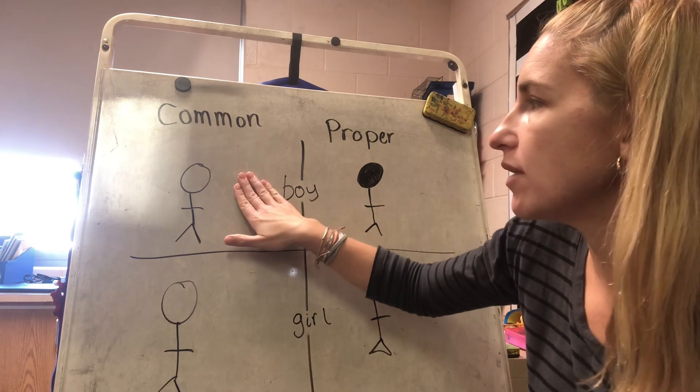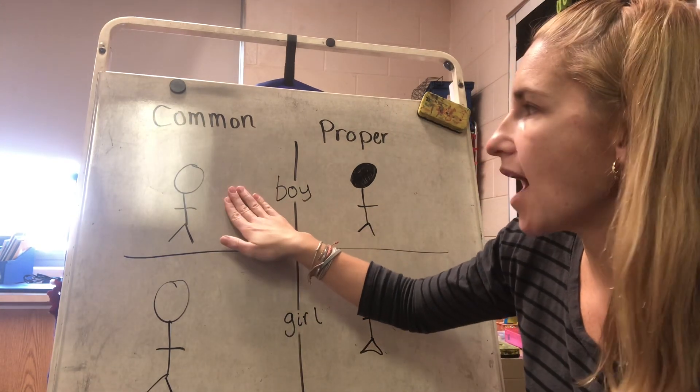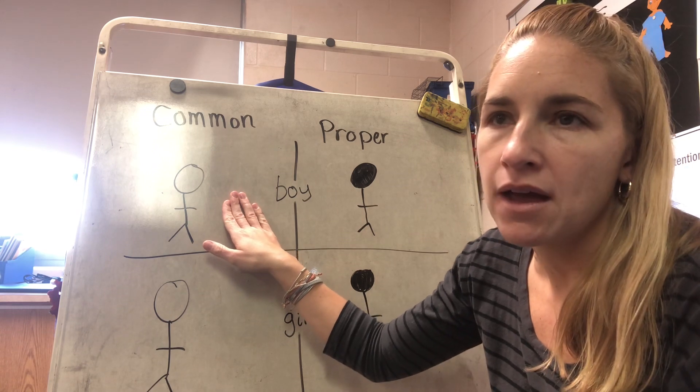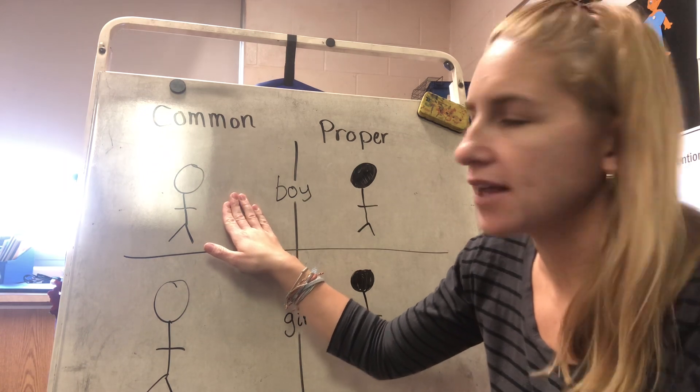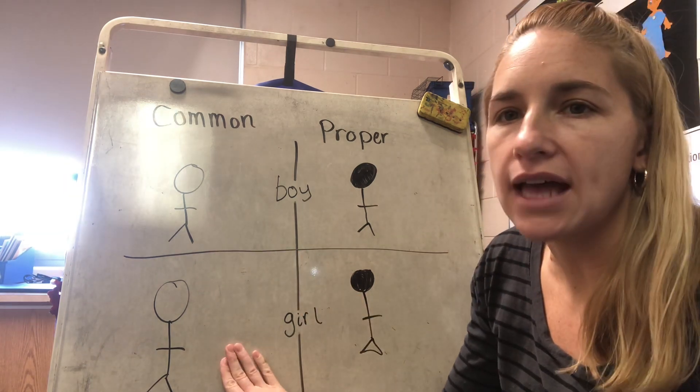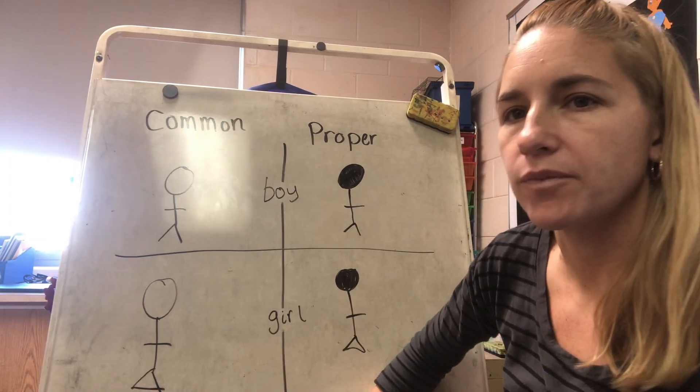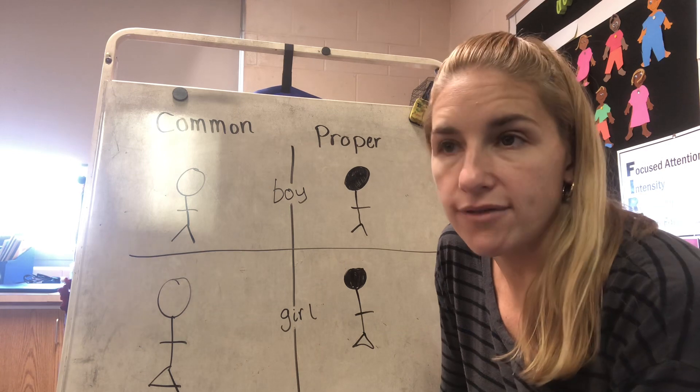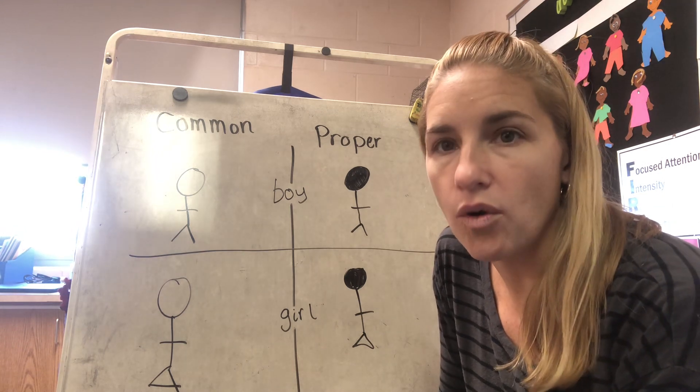We talked about the symbol that looked like this. A common boy noun would be like brother, father, or policeman. A common girl noun looked like this—that would be like wife, waitress, or mother.